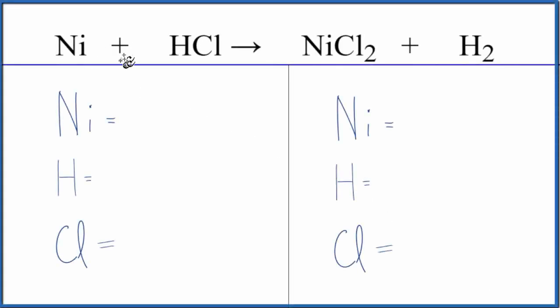To balance this equation, Ni plus HCl, that's nickel plus hydrochloric acid, let's count the atoms up on each side of the equation.